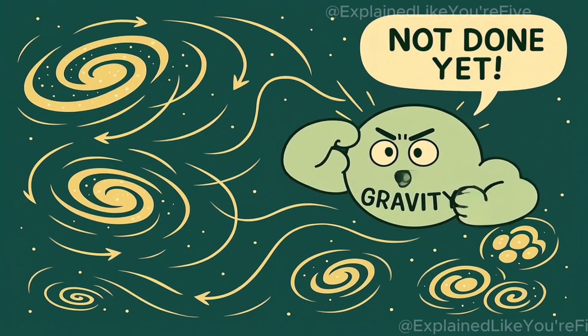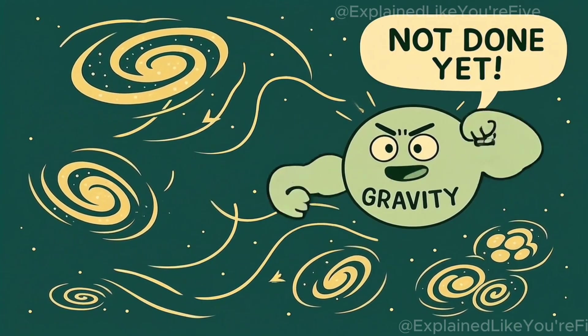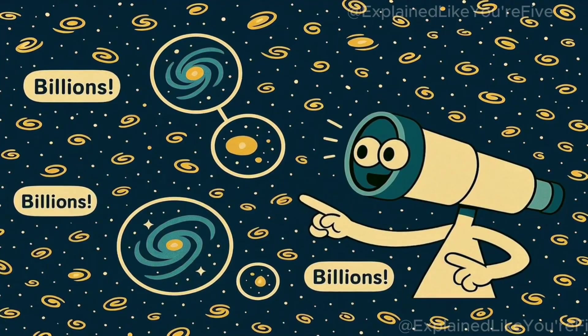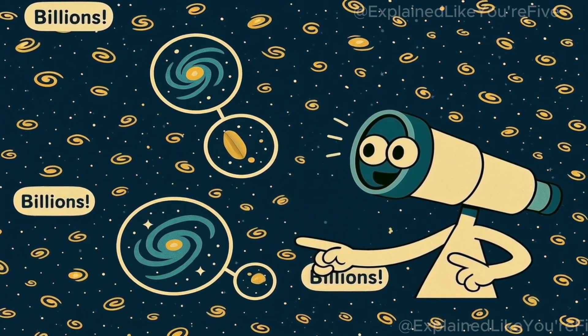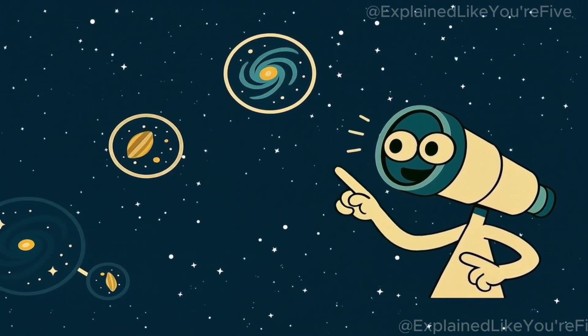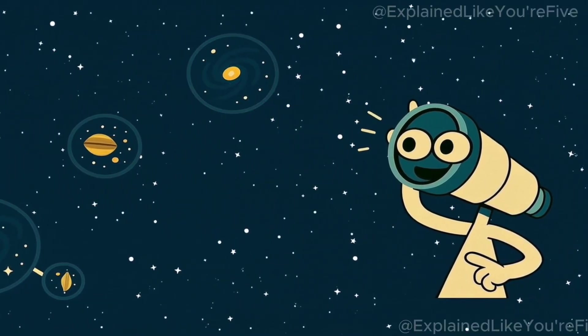But the story doesn't end there. Gravity kept on working on even larger scales, pulling galaxies together into groups and clusters. Today, we can see billions of galaxies scattered throughout the observable universe, each one containing billions of stars, and many of those stars have planets orbiting around them.